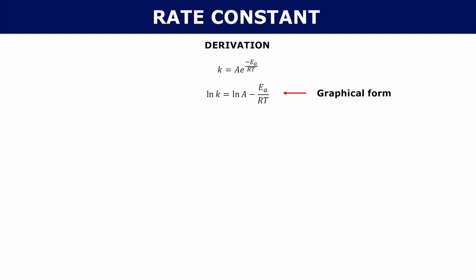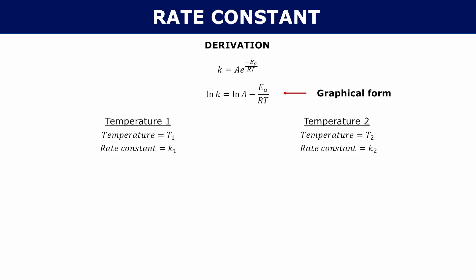We can take this and split it to get the two-point form. Imagine the same reaction happening at two different temperatures T1 and T2, with rate constants k1 and k2 — they are different because the rate constant depends on temperature. Plugging these into the graphical form gives you two equations.